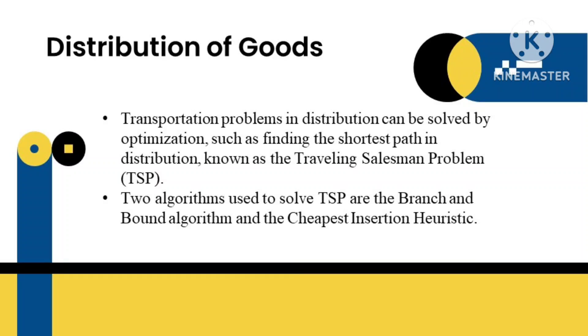It solves the challenge of determining the sequence of cities that must be passed by the courier where each city can only be visited once in a trip, and the trip must return to the starting city. Two algorithms used to solve TSP are the Branch and Bound algorithm and the Cheapest Insertion Heuristic.